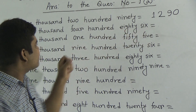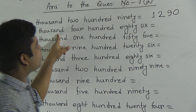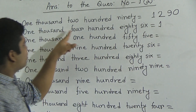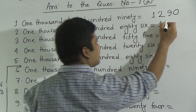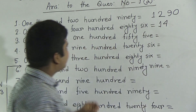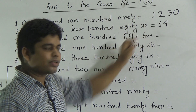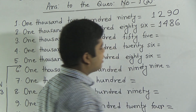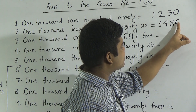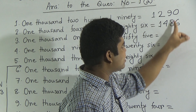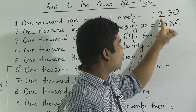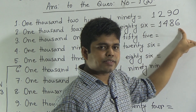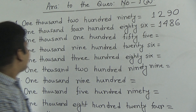Next: 1486. So first of all, we write 1000. Write 1000 first. Next, 400 — so write 4. After that, 86 — so write 86, that means 8 and 6. Notice: 6 is in 1's place, 8 is in 10's place, 4 is in 100's place, and 1 is in 1000's place. So we read this as 1486.